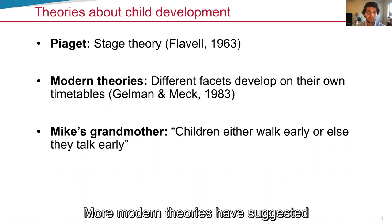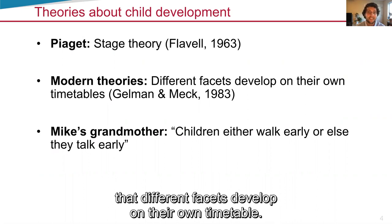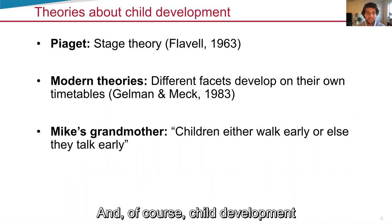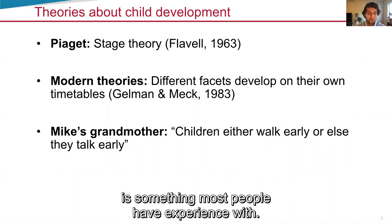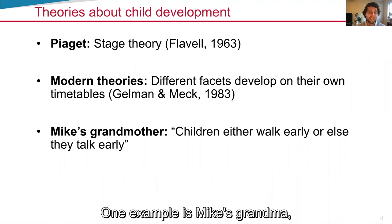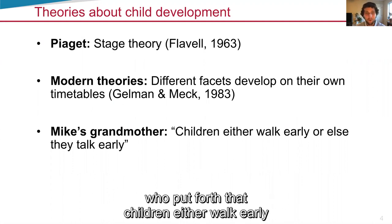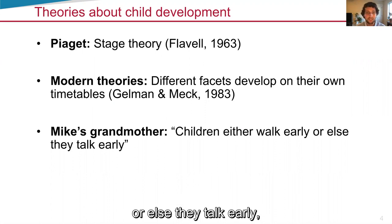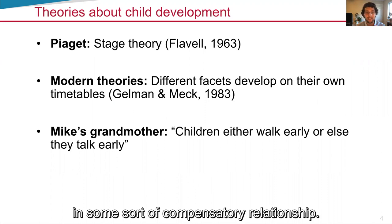More modern theories have suggested that different facets develop on their own timetable, and of course, child development is something most people have experience with. One example is Mike's grandma who put forth that children either walk early or else they talk early, as if these happen in some sort of compensatory relationship.